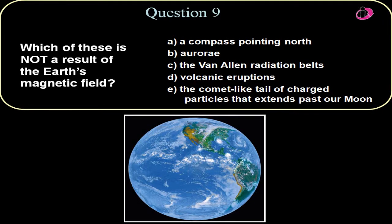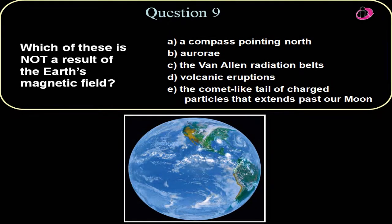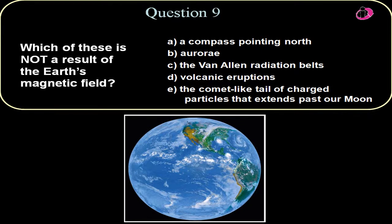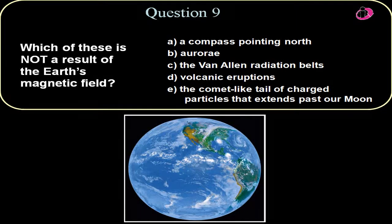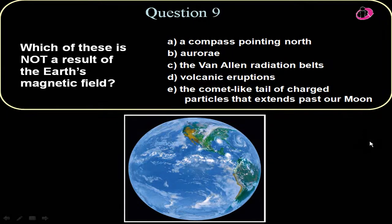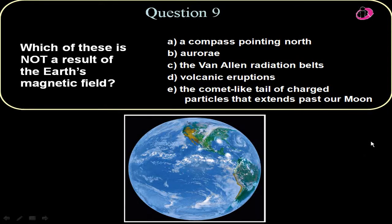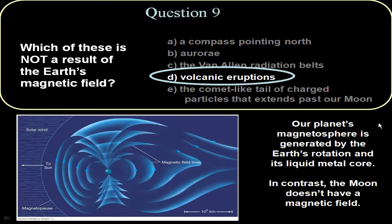It also gives us the auroras, the northern lights and the southern lights. It results in the Van Allen radiation belts that trap particle areas within the Earth's magnetic field. It creates a comet-like tail of charged particles that extends past our moon. So the only thing it doesn't do is volcanic eruptions. So that is not a result of the Earth's magnetic field.